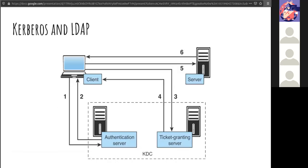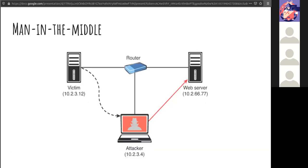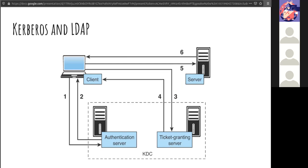Next are Kerberos and LDAP — the Lightweight Directory Access Protocol. A quick recap on how the Kerberos system works: it's a six-step process.